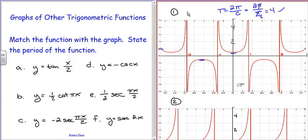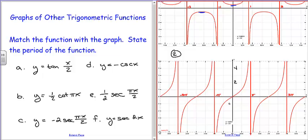So the answer is E. Now the next function, number 2, has the characteristic shape of a tangent or cotangent. Notice we're going through 0 here — the tangent of 0 is 0, so that makes it more likely to be the tangent. There's one cotangent and one tangent listed.